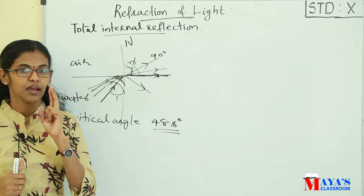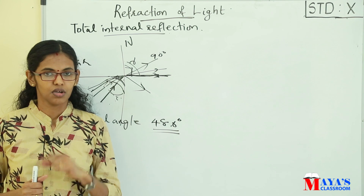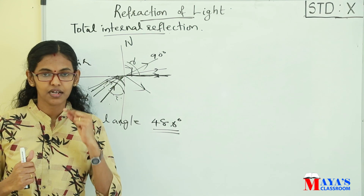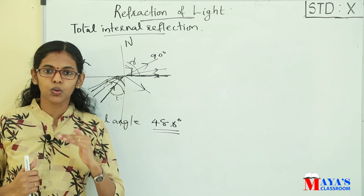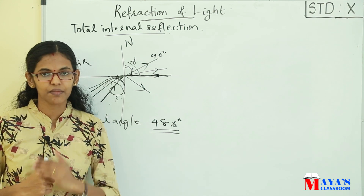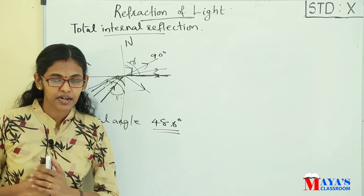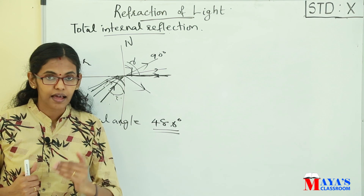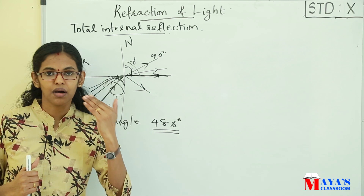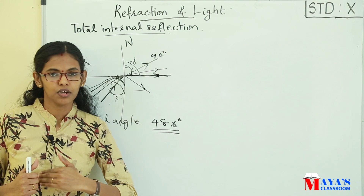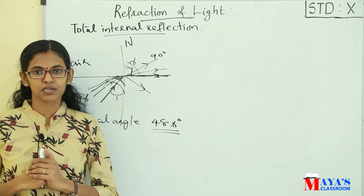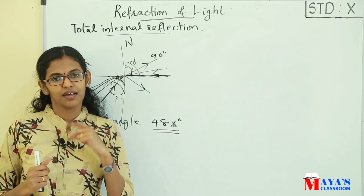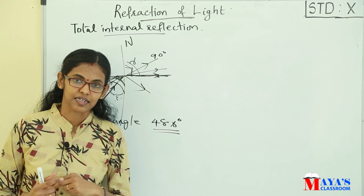For Total Internal Reflection to occur, the ray should travel from a denser to a rarer medium. The second condition is that the angle of incidence must be greater than the critical angle.